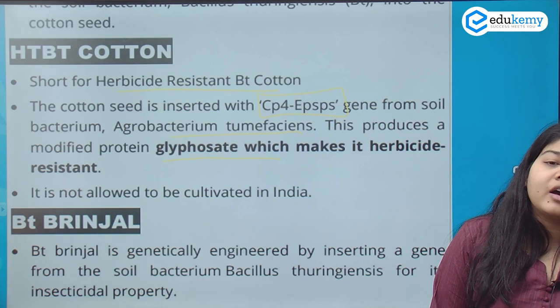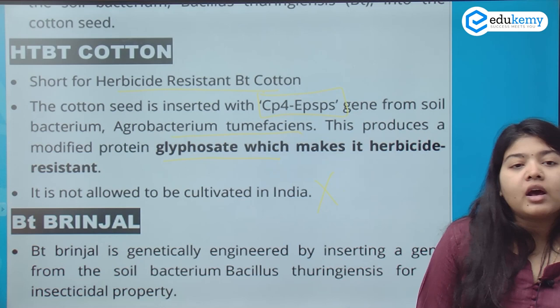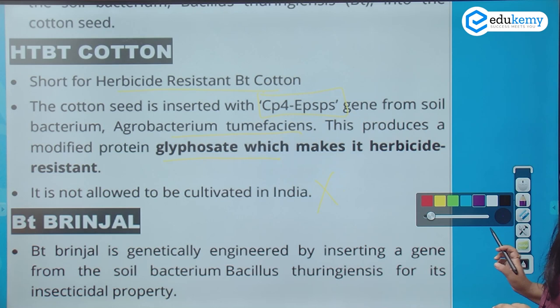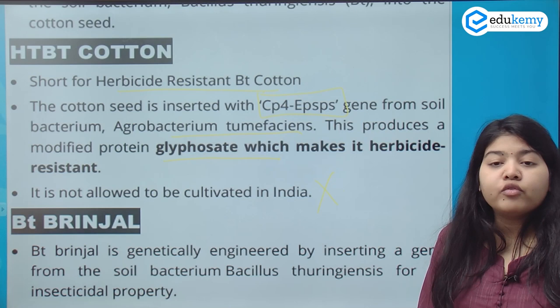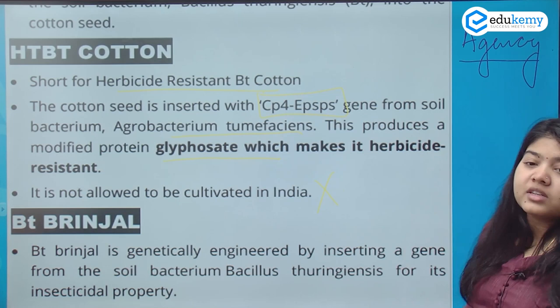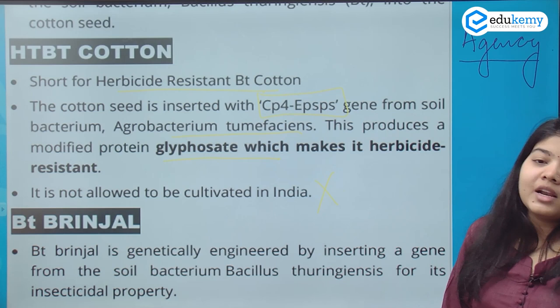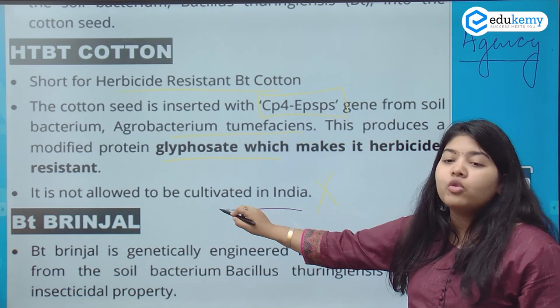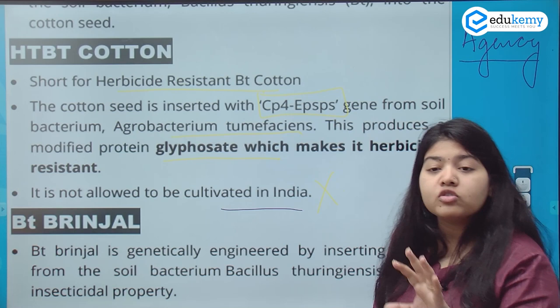HT BT cotton is not allowed in India, but it was demanded very aggressively by farmers and corporates, who pressured India for approval. The agency which approves GM crops is the GEAC — Genetic Engineering Appraisal Committee. It is grown illegally but is not officially approved. The GEAC allows genetically modified crops and organisms to enter the country only after approval.